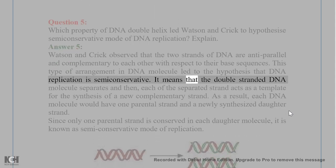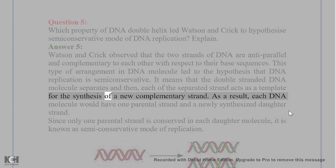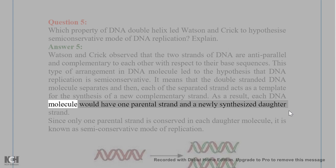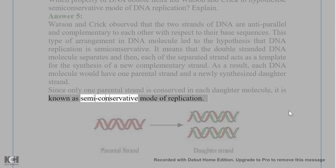It means that the double-stranded DNA molecule separates, and then each of the separated strands acts as a template for the synthesis of a new complementary strand. As a result, each DNA molecule would have one parental strand and a newly synthesized daughter strand. Since only one parental strand is conserved in each daughter molecule, it is known as the semi-conservative mode of replication.